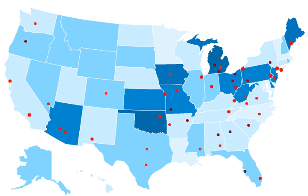In addition to the COMLEX-USA, DO medical students may choose to sit for the MD Licensure Examinations, called the United States Medical Licensing Examination (USMLE), typically done if the student desires to enter an MD residency. However, some MD residency programs do not require the USMLE from DO applicants. USMLE pass rates for DO and MD students in 2012: Step 1, 91% and 94%; Step 2 CK, 96% and 97%; and Step 2 CS, 87% and 97%, respectively. This may be misleading as only 46 DO students compared to 17,118 MD students were evaluated for Step 2 CS. Step 3, 100% and 95%, though only 16 DO students compared to 19,056 MD students were evaluated for Step 3.